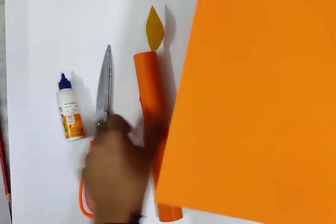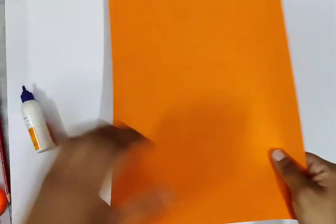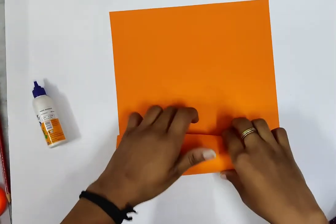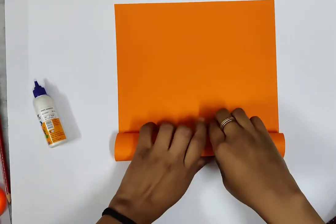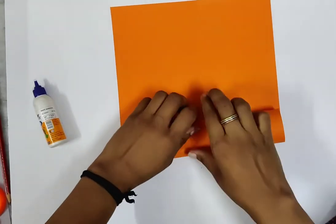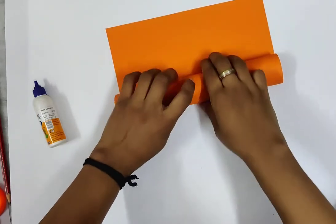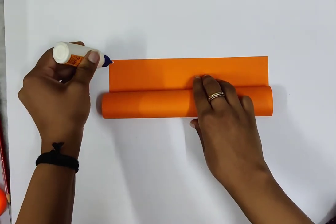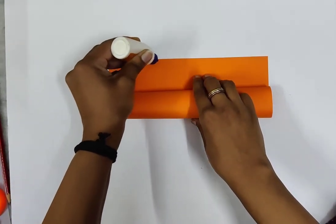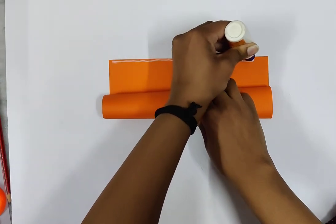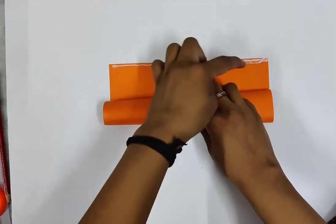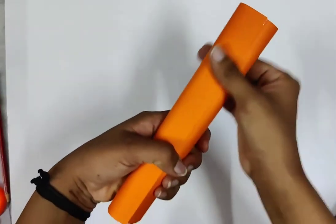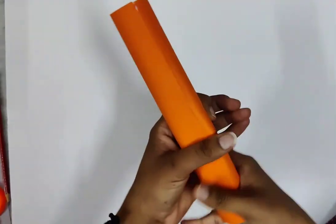The first step is you have to fold this sheet like this. You have to roll this - you have to make a roll out of it. Just roll, then roll, then roll. Now take your fevicol and apply here. Now fold and roll and make it one roll.